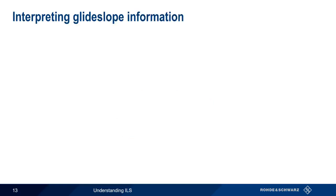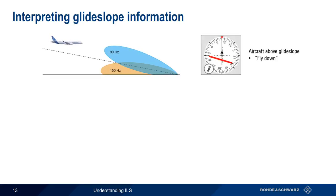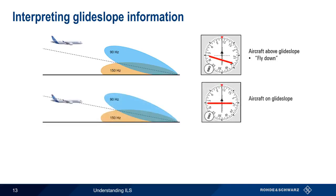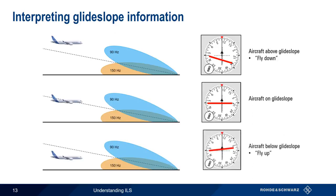As with the localizer, deviation from the glide slope is shown by needle deflection. For example, if the aircraft is above the glide slope, the needle points downwards and the pilot needs to fly down to intercept the glide slope. An aircraft centered on the glide slope produces a flat, horizontal needle. And if we're below the glide slope, the needle deflects upwards, indicating that the pilot needs to fly up.